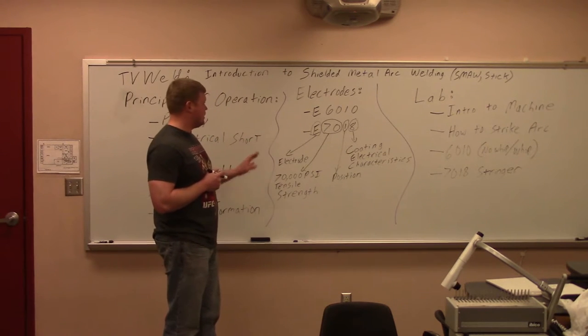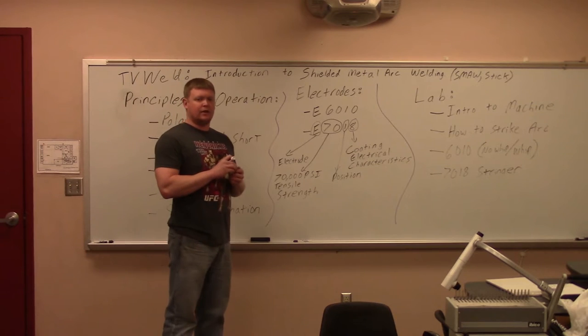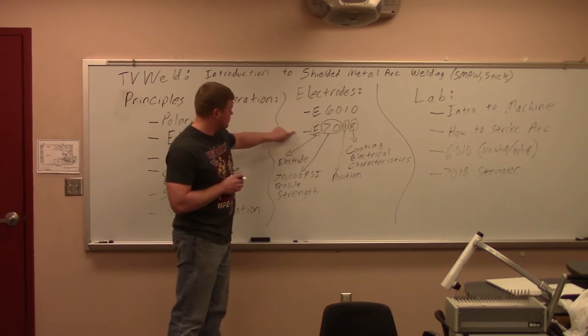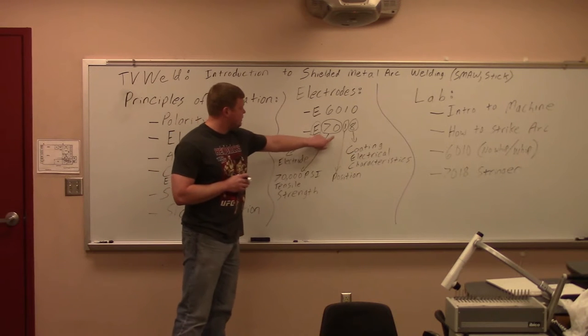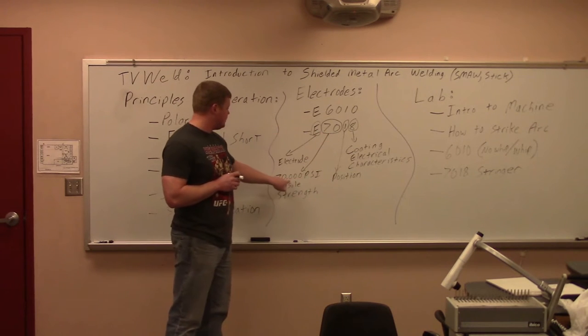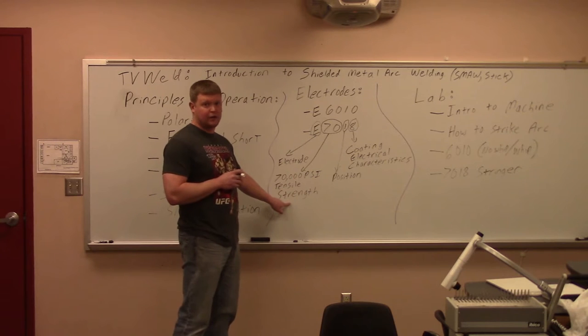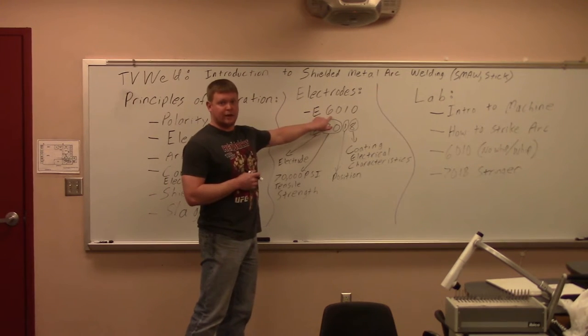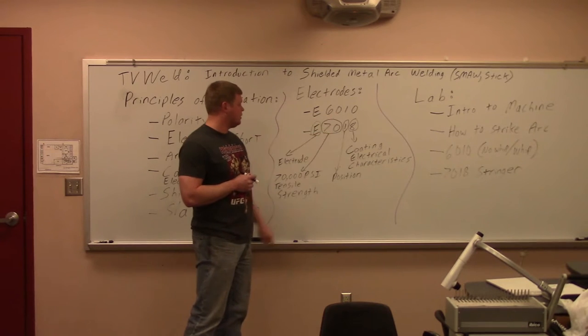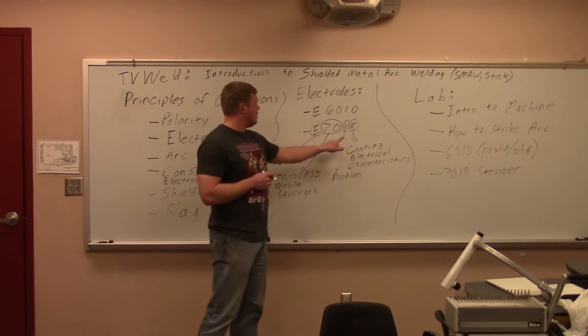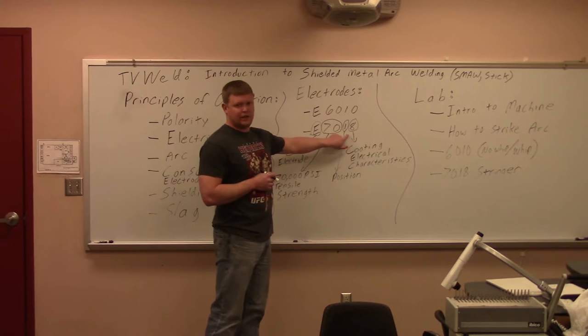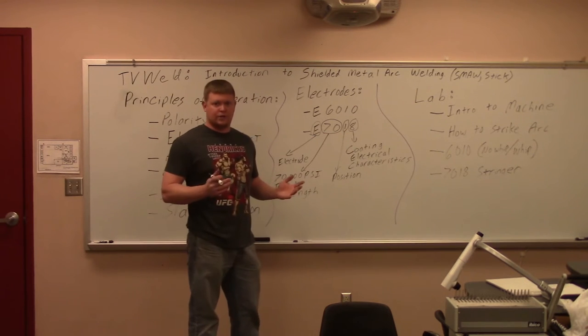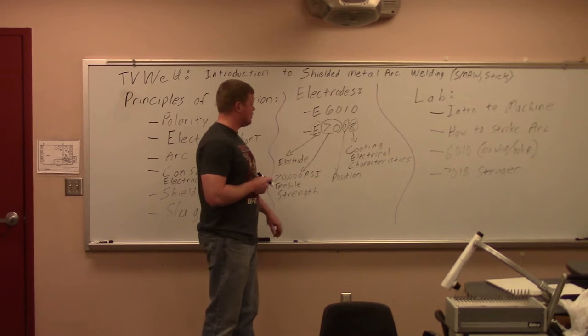What these designations mean, and you'll see them stamped right on the ends of the electrodes, the E means electrode, the 70 means 70,000 pounds per square inch minimal tensile strength. So if you're going back up to 6010 here, it would be 60,000 pounds per square inch of minimal tensile strength. The third number on these electrodes is going to dictate your position, your welding position. The one means you can weld in all positions. So both of these rods can weld in all positions.